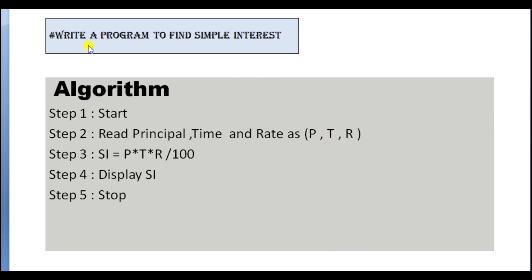In another program: write a program to find simple interest. In algorithm — Step 1: Start. Step 2: Read principal, time, and rate as P, T, R. Step 3: Simple Interest equals P multiplied by T multiplied by R, divided by 100. This is the formula to calculate simple interest. Step 4: Display simple interest. Step 5: Stop the program.